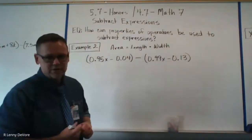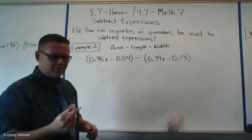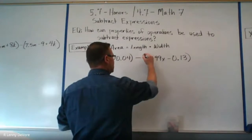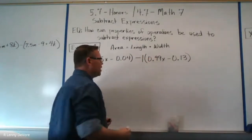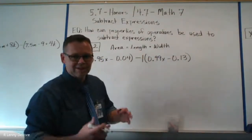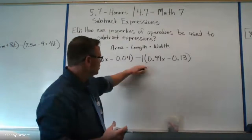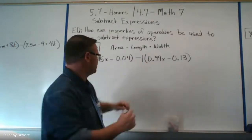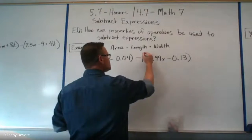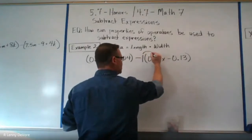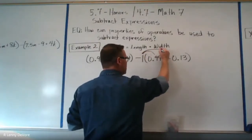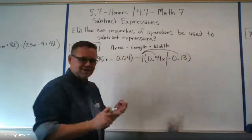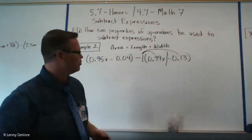Here's the thing: when you have a subtraction sign in between, this is the same as saying minus 1 — there's a negative 1 that you're going to distribute amongst these two terms within these parentheses. You'll multiply the negative 1 by each term. Remember, terms are always separated by an addition, subtraction, or equal sign.